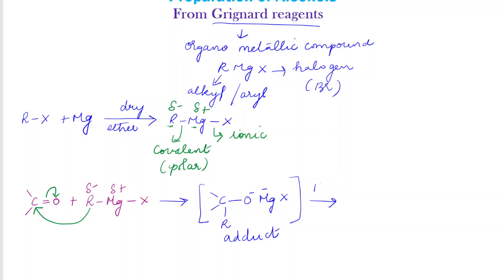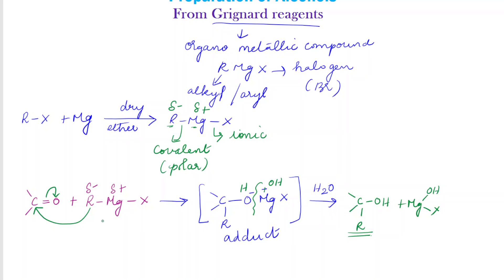This adduct on further hydrolysis will give out alcohol. The bond breaks, hydrogen is added to oxygen from H₂O, and magnesium leaves as MgOHX. The products are R-OH plus MgOHX. We get alcohol as the main product. This is the complete mechanism of the reaction of a Grignard reagent with a carbonyl compound.